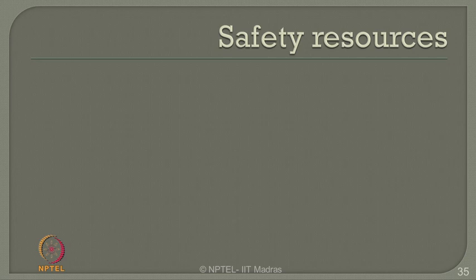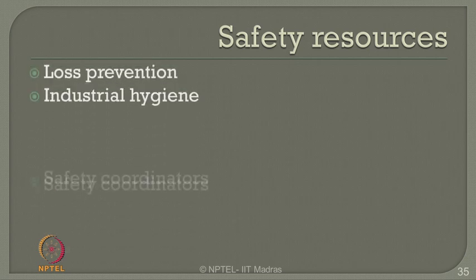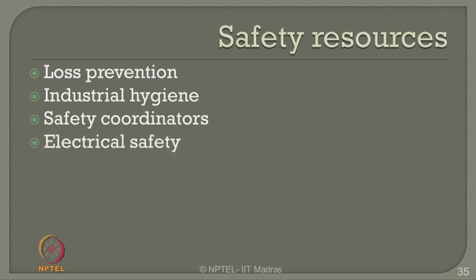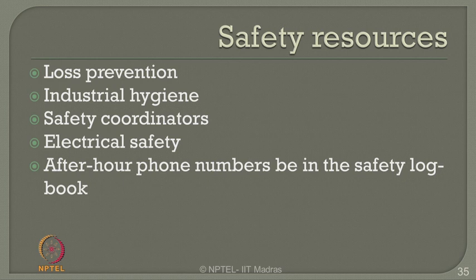Let us quickly see the safety resources that come into play: loss prevention, industrial hygiene, safety coordination, electrical safety, and importantly — after-hours phone numbers in the safety log book. The last point is very important because generally in a safety log book, after-hours phone numbers are not written properly. In case of emergency, the plant personnel may have left, but their phone number for contact should be available so you can understand what safety violations were expected in the previous shift. A clean and responsible shift handover report is a very important document that can enhance safety in any process industry.